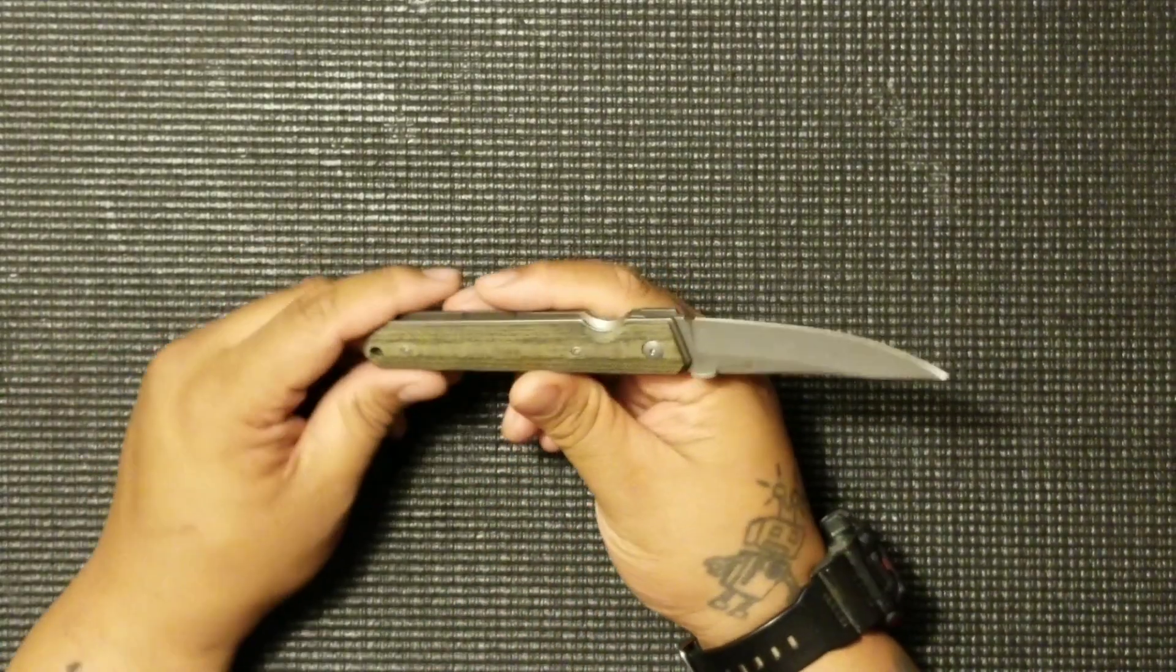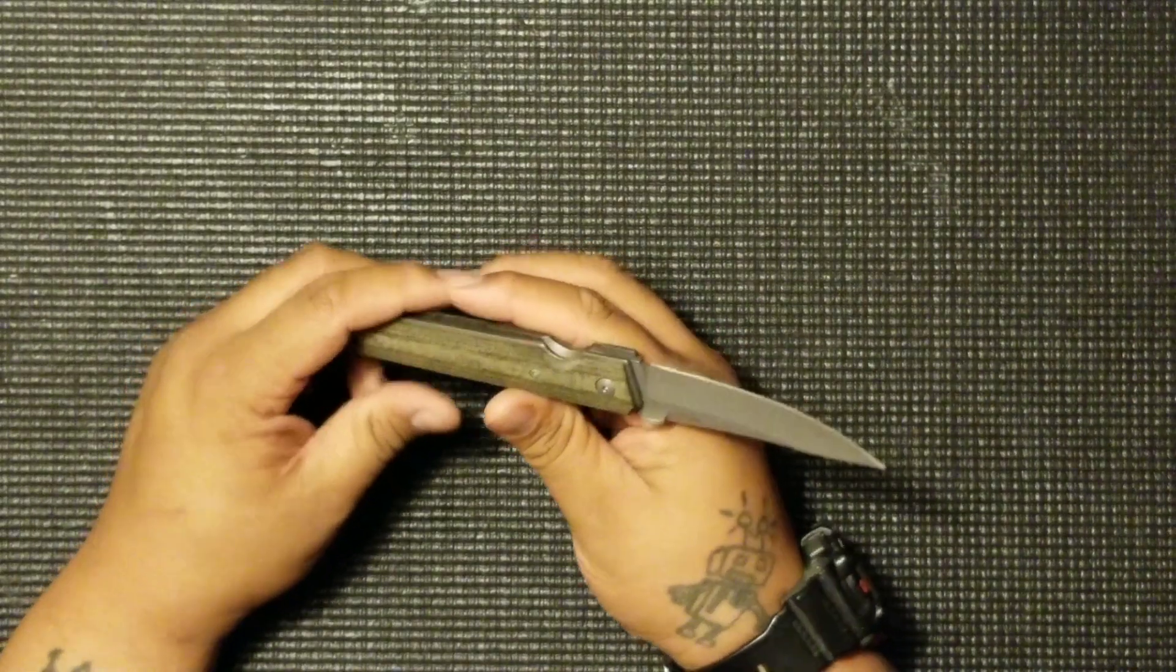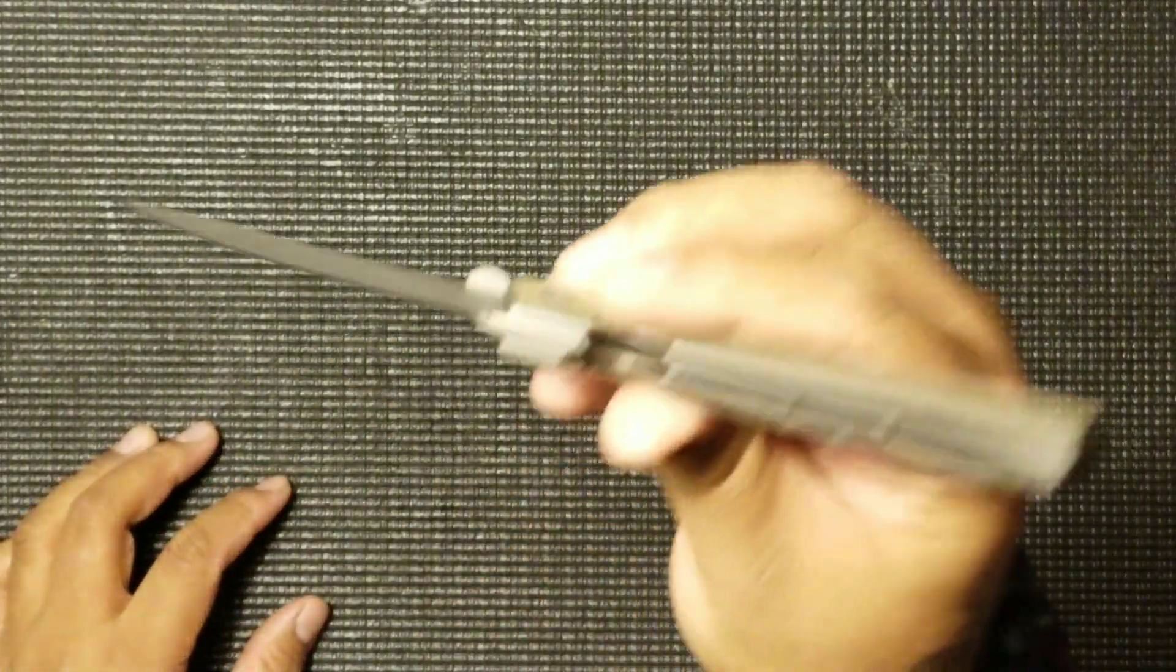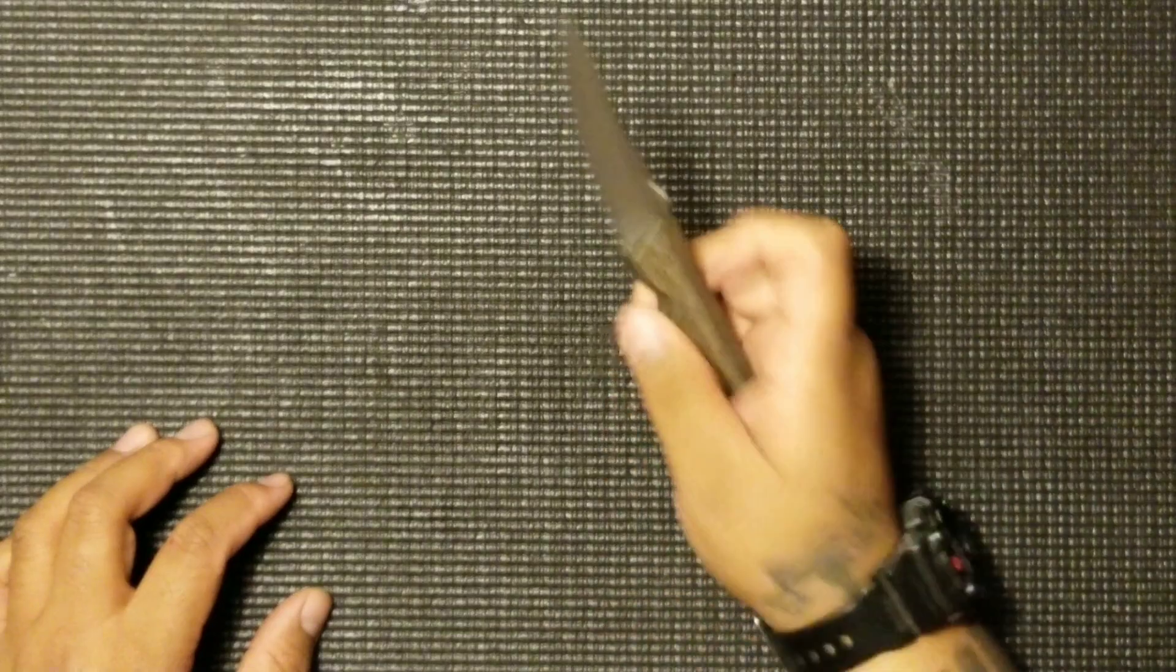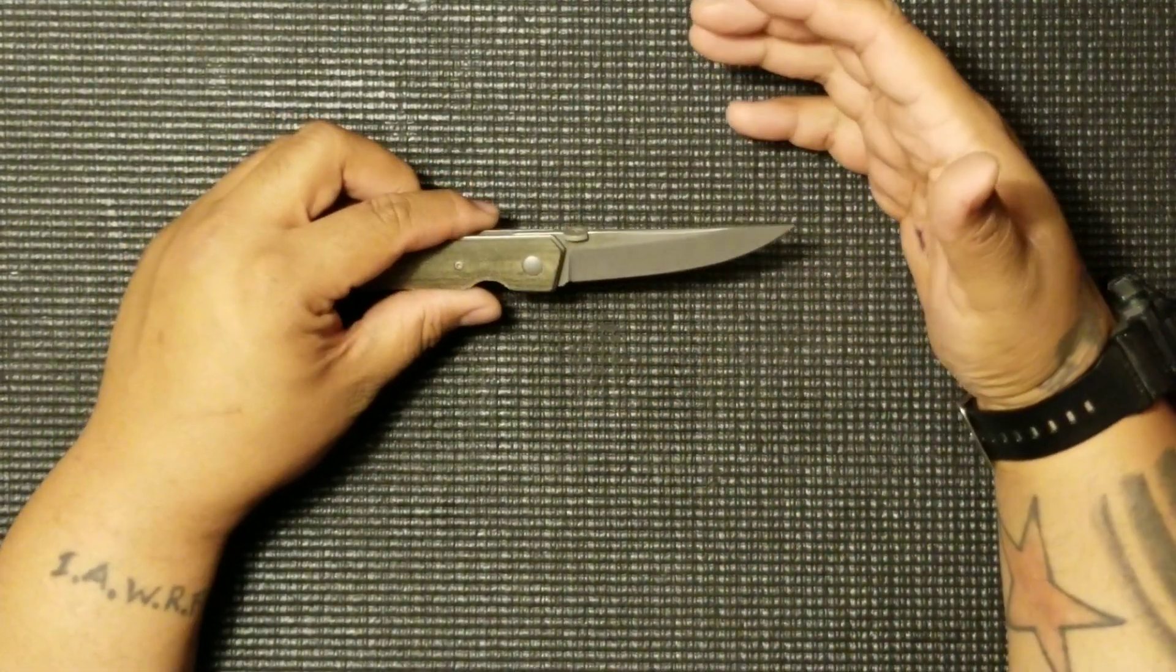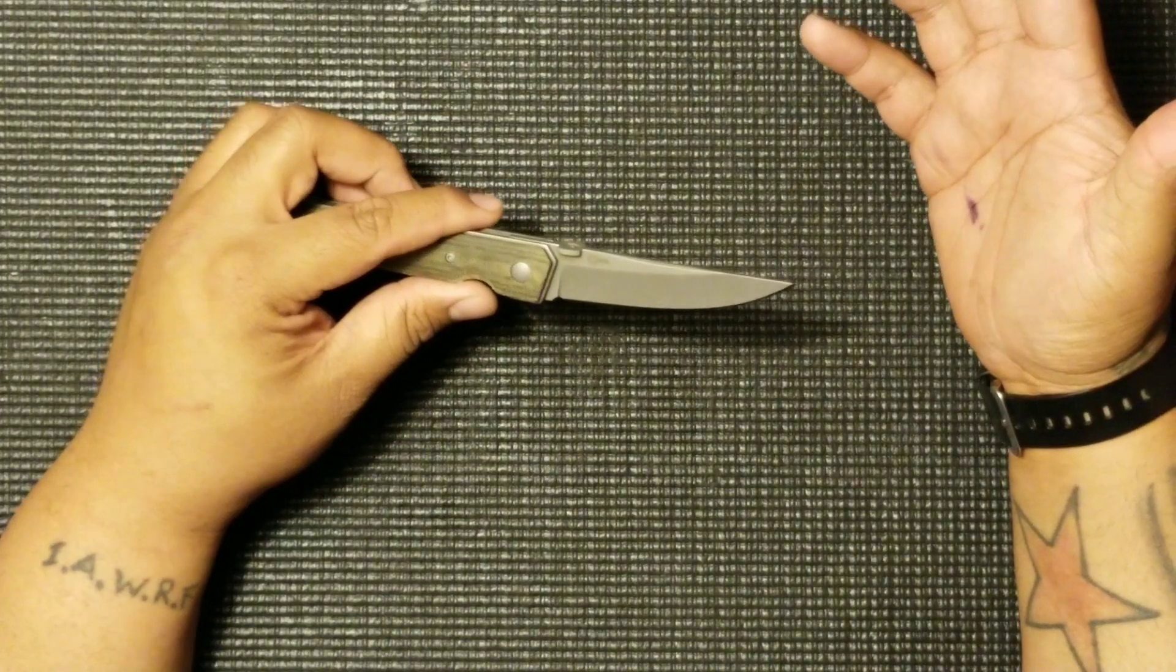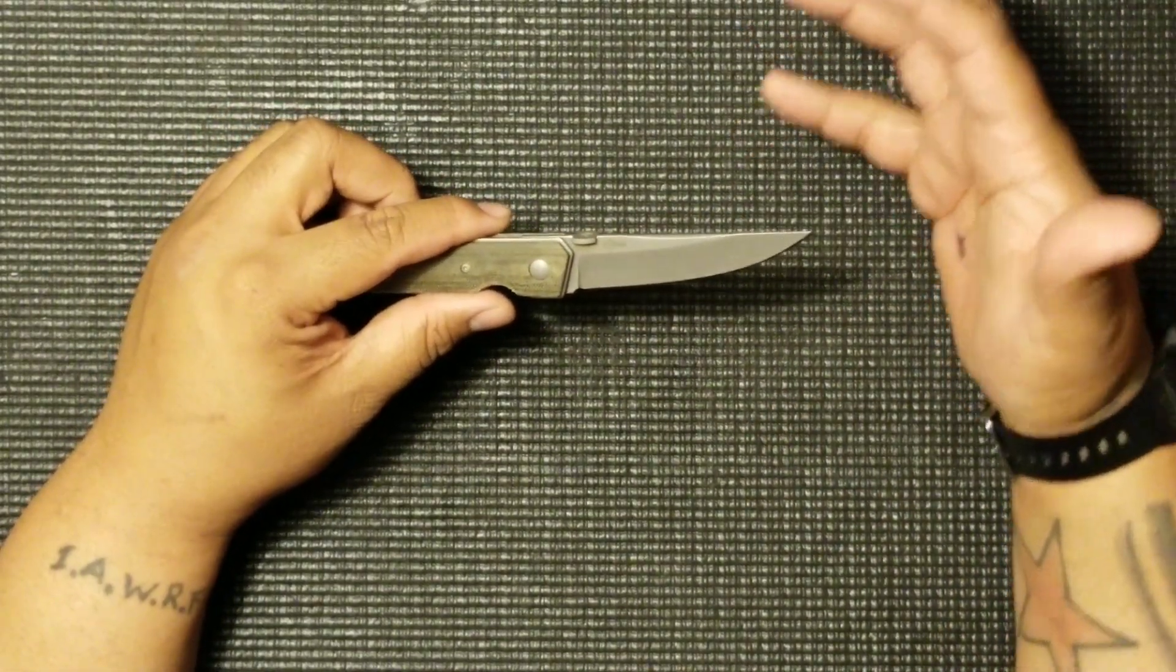So you got a 3.5 inch blade, it is Japanese Aus8 steel. You can see that right there, Japanese Aus8. Blade HQ says that it's a trailing point, to me it's more Japanese Tanto inspired. I don't know, let me know in the comments what you guys think. There is a flat grind on it with a plain edge, so it's going to be good at slicing and dicing.